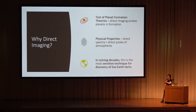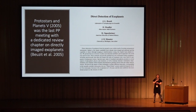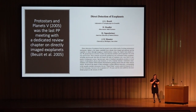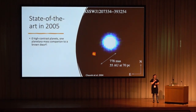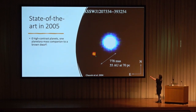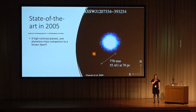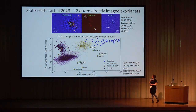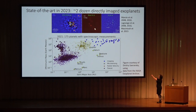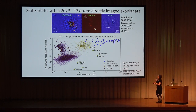The last time there was a dedicated review chapter on directly imaged exoplanets at a Protostars and Planets meeting was in 2005. Back then, we had exactly zero high contrast planets — 2M1207B, a planetary mass companion to a brown dwarf, was our one singular planetary mass companion known. In the last 20 years, we've now imaged about two dozen directly imaged exoplanets, though there's a lot of argument about what is and isn't an exoplanet. You've definitely seen the famous systems: HR 8799 BCDE, Beta Pic b, and 51 Eri b. Now we really have a cohort of planets to characterize.